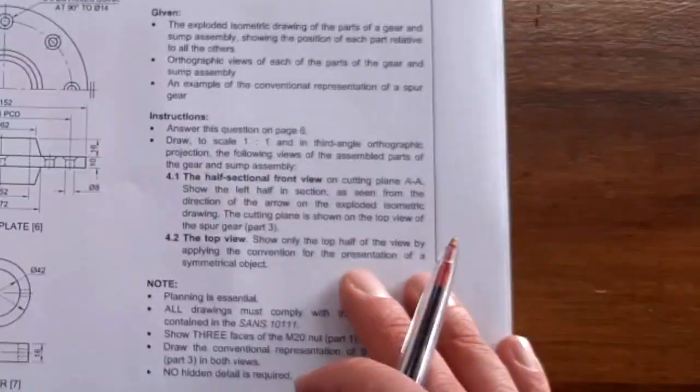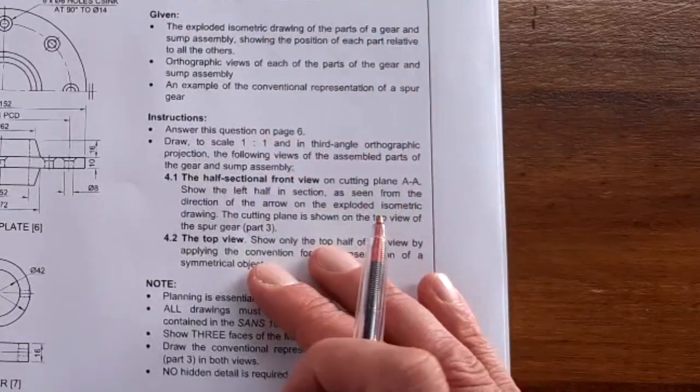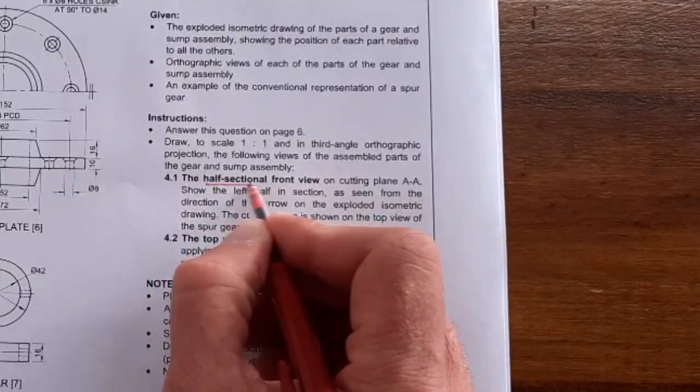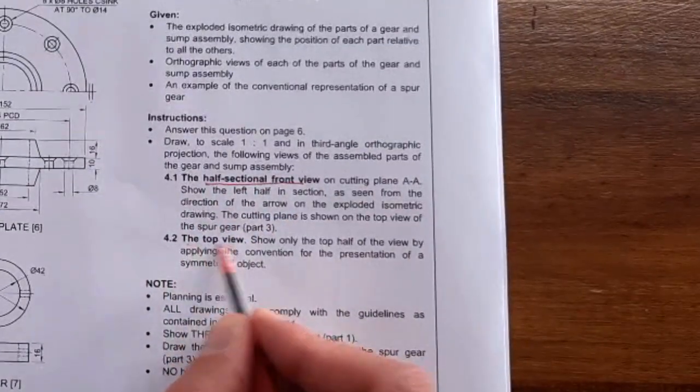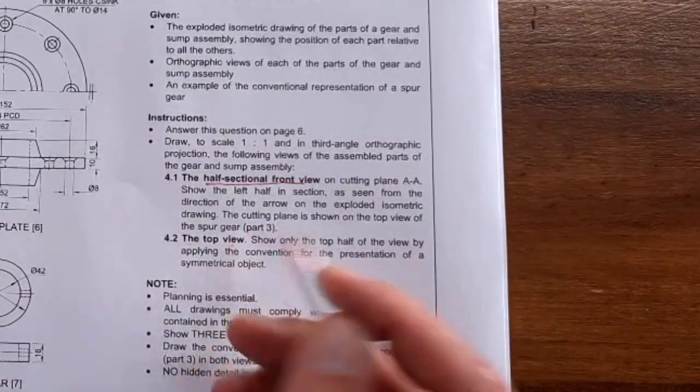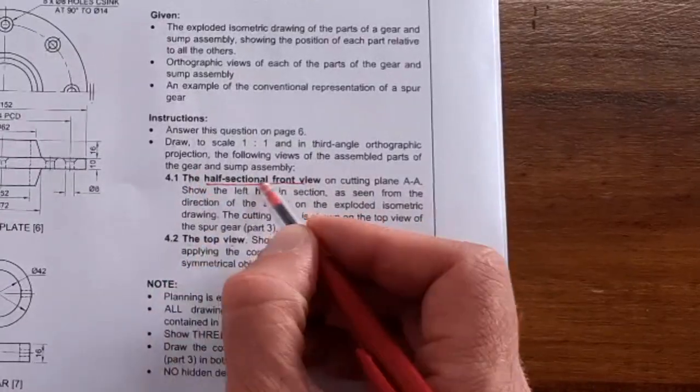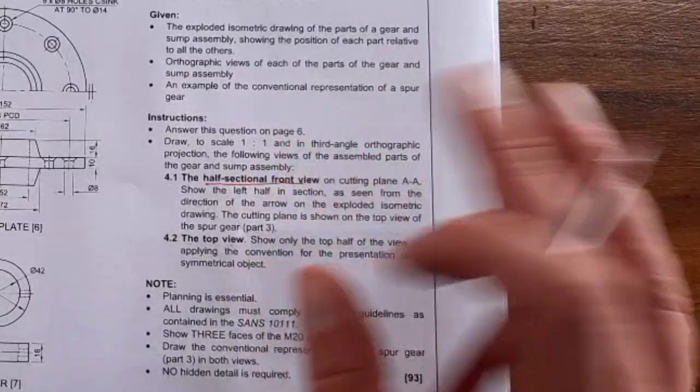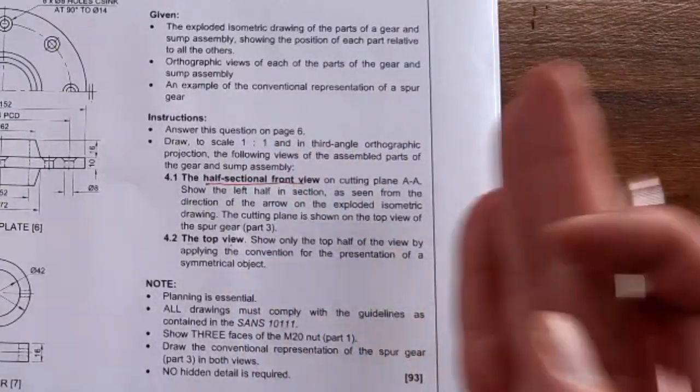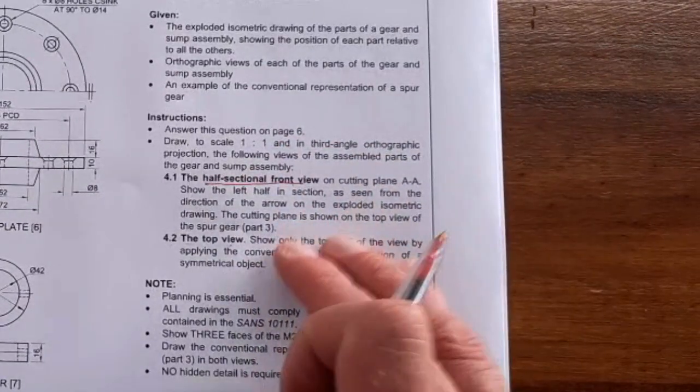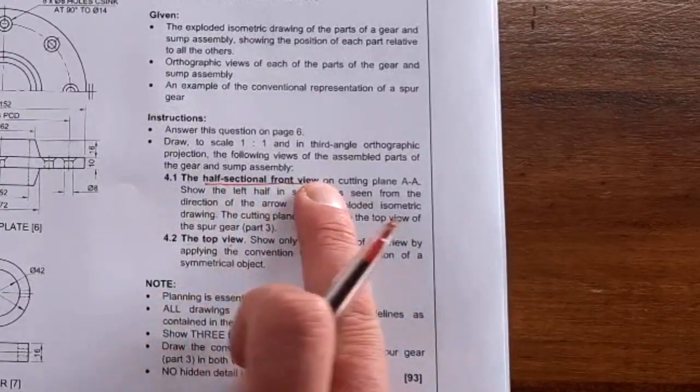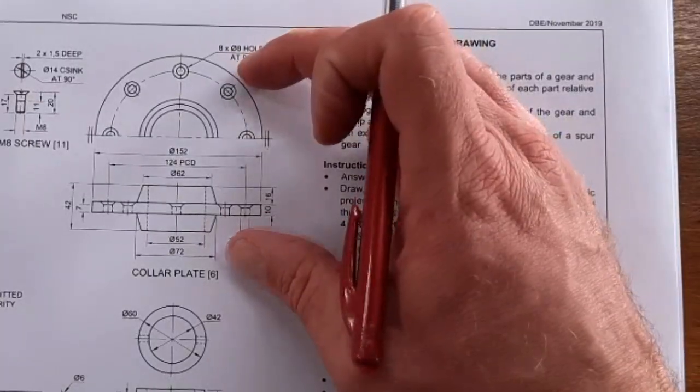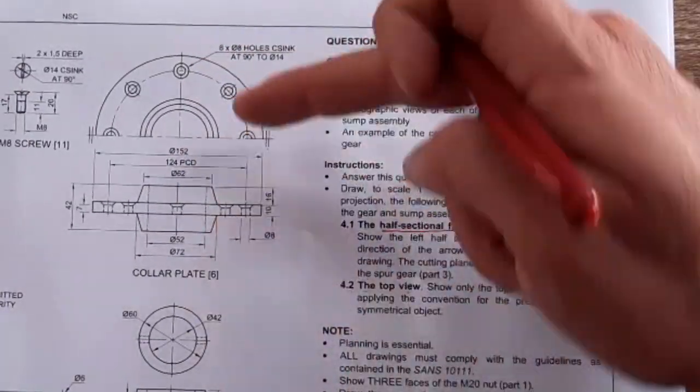How do I start this drawing? First, read your question in full because sometimes they actually catch you out. Here they're asking for a half sectional front view plus a top view, and the top view is not sectioned. There was one year where they just asked a full sectional front view and we had learners doing top views and right views and left views. Don't waste your time by doing things that aren't asked. Make sure you read the question fully.